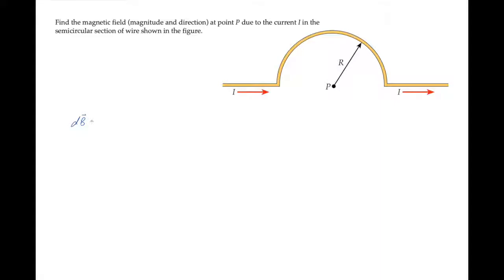We can find that magnetic field using the Biot-Savart law, which tells us that the magnetic field due to some segment of the wire is mu-naught over 4pi i times dl cross r-hat over r-squared.